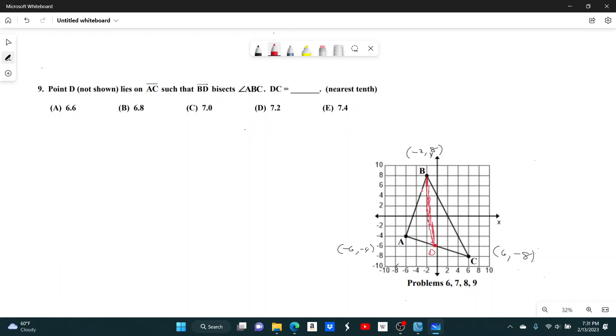Such that when you draw this line, the angle here and the angle here are going to be the same. So it's going to cut angle B in half. And from there, we just want to find DC, or this length right here.